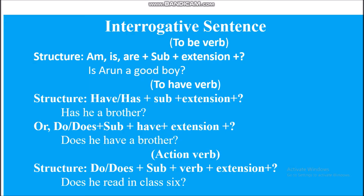How to make interrogative sentences. In case of to be verb, structure: Am, is, or are, plus subject, plus extension, plus question mark. Example: Is Arun a good boy? In case of have verb, structure: Have or has, plus subject, plus extension, plus question mark — Has he a brother? Or: Do or does, plus subject, plus have, plus extension, plus question mark — Does he have a brother?